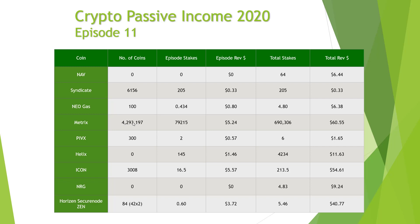I've mentioned in previous videos that I'm looking to get rid of some of these smaller cap coins and replace them with larger cap staking coins, and I've now got to the point where that's going fully ahead. I've actually got rid of Helix over the last couple of weeks. With Syndicate, I've been on an orphan chain - I suddenly received a load more stakes than normal about two weeks ago, which normally means you're on an orphan chain.